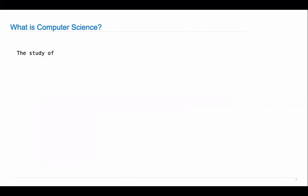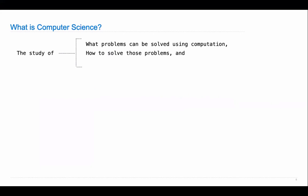This is an introduction to computer science. We teach you what computer science is and introduce you to all the important concepts. Computer science is the study of what is arguably the most flexible machine ever created by people. In particular, we tend to study what problems can be solved using computation, how to solve those problems — that's a lot of what this course is about — and what techniques lead to effective solutions.